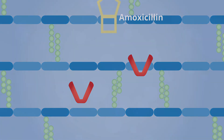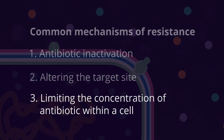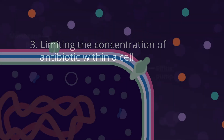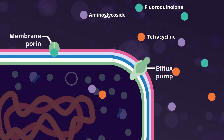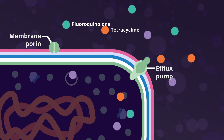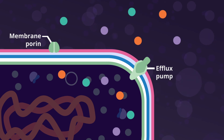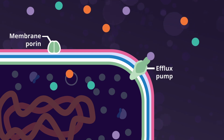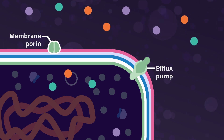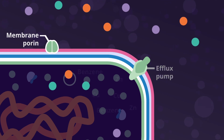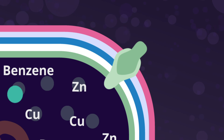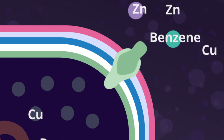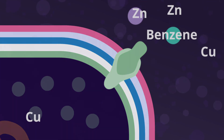The final common mechanism of resistance we're going to consider is the ability of some bacteria to limit the concentration of the antibiotic within the cell. Bacteria can achieve this through alterations in membrane porins that make it harder for the antibiotic to enter the cell, or by actively removing intracellular antibiotics via efflux pumps. Some bacteria employ both mechanisms simultaneously. Efflux pumps enable bacteria to remove a number of toxic substances, including organic solvents and heavy metals, as well as antibiotics. They are particularly important in gram-negative bacteria like E. coli and Pseudomonas aeruginosa.